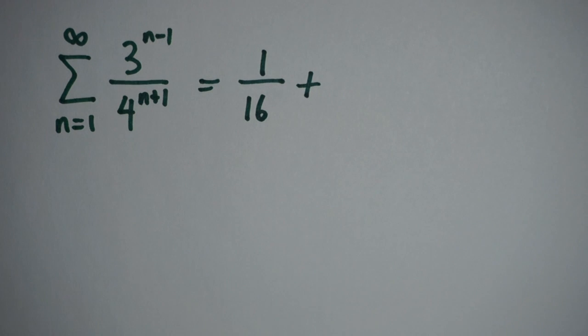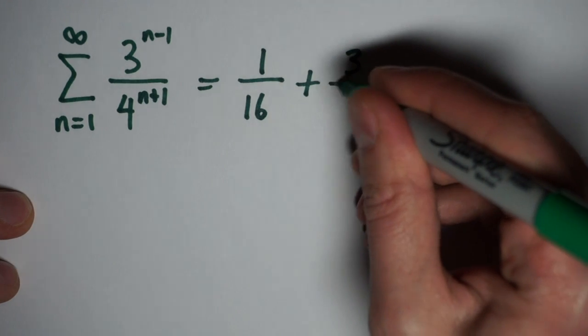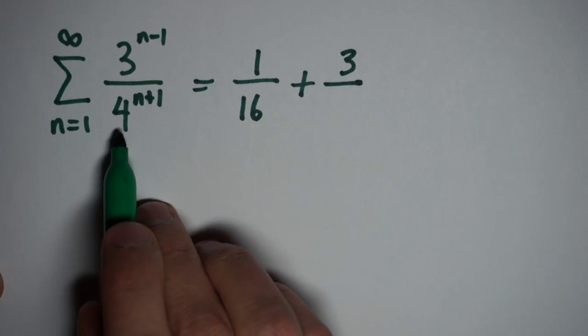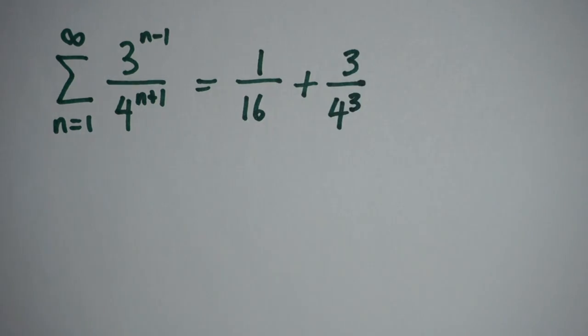When n is equal to 2, I'm looking at 3 to the 2 minus 1, which is 3, divided by 4 to the 2 plus 1, which is 4 to the 3rd. And I'll leave it as 4 to the 3rd.